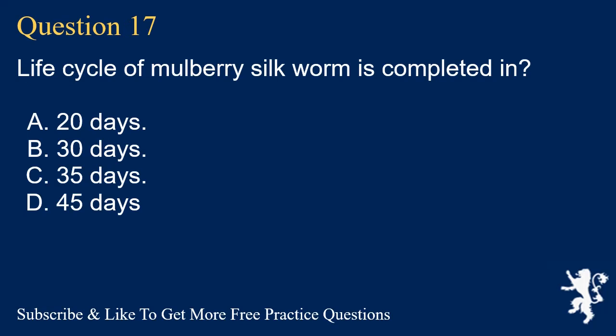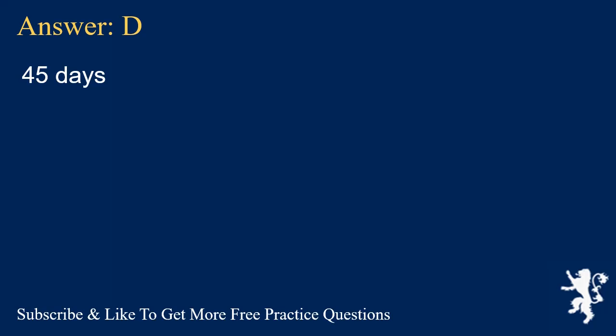Question 17. Life cycle of mulberry silkworm is completed in? A. 20 days. B. 30 days. C. 35 days. D. 45 days. Answer: D. 45 days.